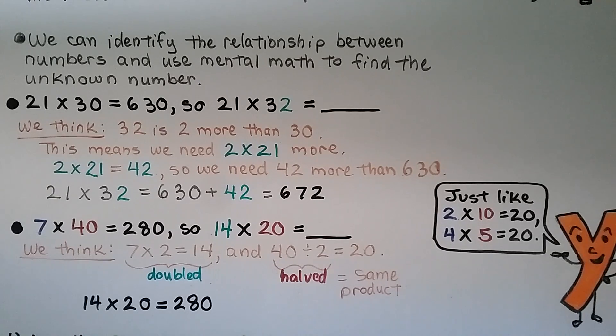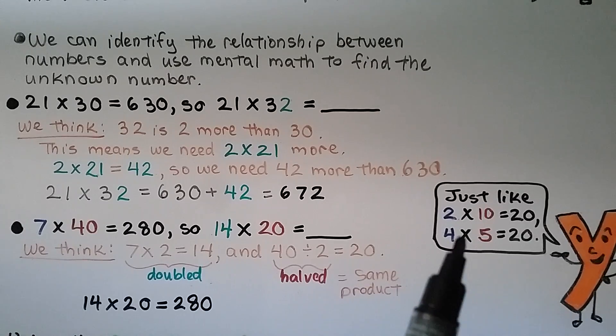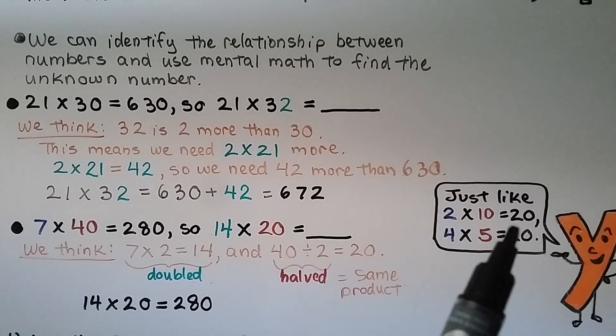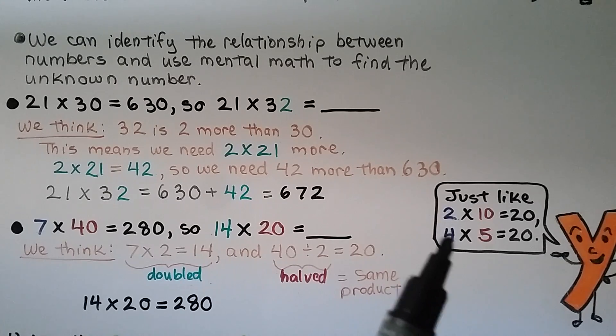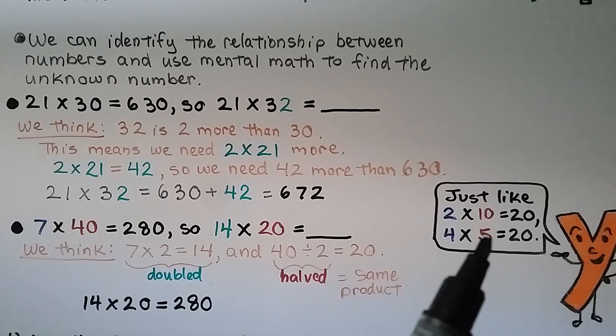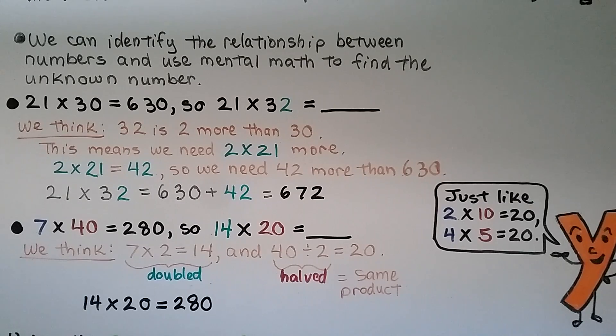Now if that was confusing, let's try it with some smaller numbers. So if we have 2 times 10 is equal to 20, and we double the 2 to be a 4 and we cut the 10 in half to be a 5, 4 times 5 is also equal to 20. One number was doubled. One number was cut in half. It has the same product.